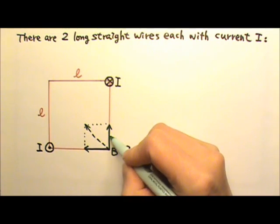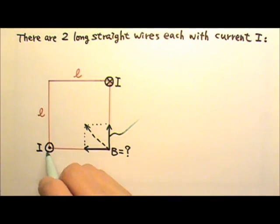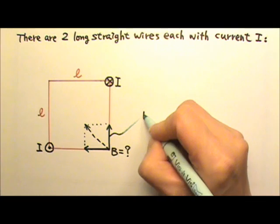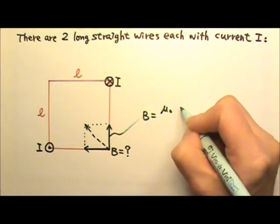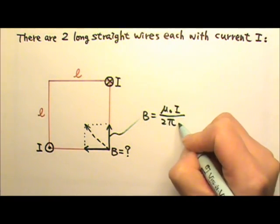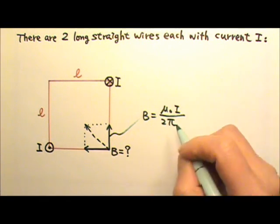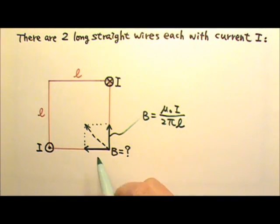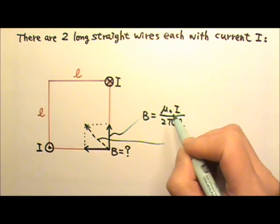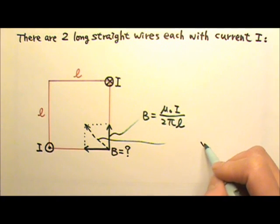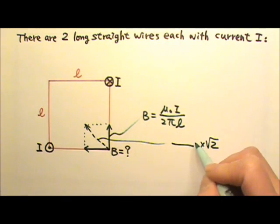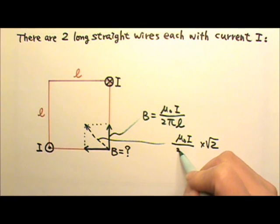So I can first find the field produced by that current, which is mu naught I over 2 pi r, and in this case the r is L. The other one is the same amount, and since this is a square, that means the diagonal is this times square root of 2. So the answer is mu naught I over 2 pi L times square root of 2.